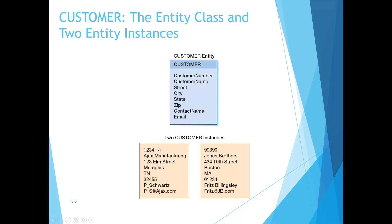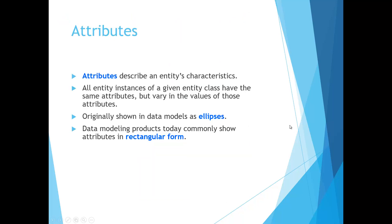In the first instance, we have the customer number, customer name, street address, city, state, zip code, contact name, and email. The characteristics of an entity are called attributes. All entity instances of a given entity class have the same attributes, but vary in the values of those attributes. We can represent attributes in the data model with ellipses, or with the newer rectangular form.